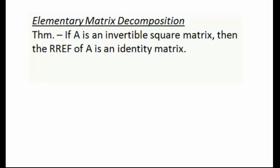Before we do that, I want to introduce you to a very important theorem. That theorem says if A is a square matrix and it's invertible, then the reduced row echelon form of A has to be an identity matrix.